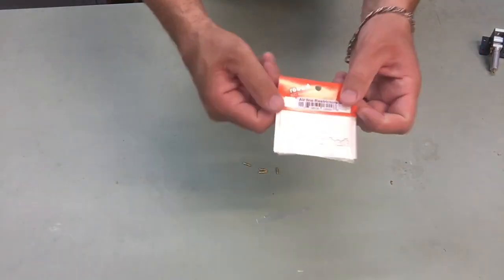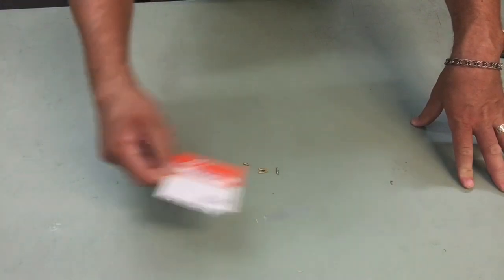So with the airline restrictors, part number 189, you get four airline restrictors.